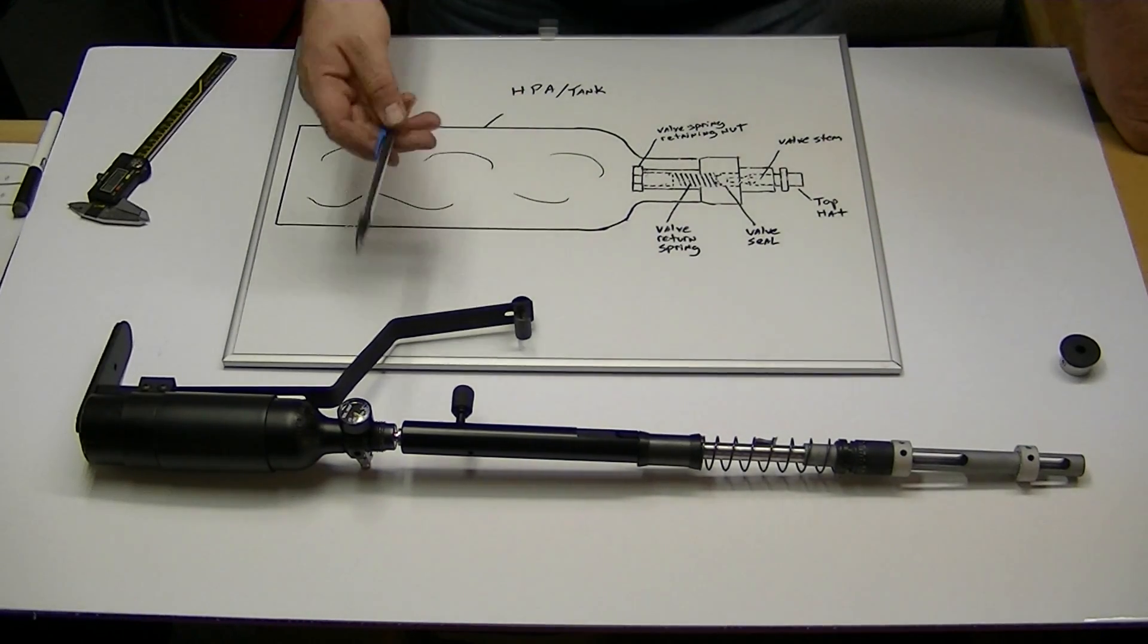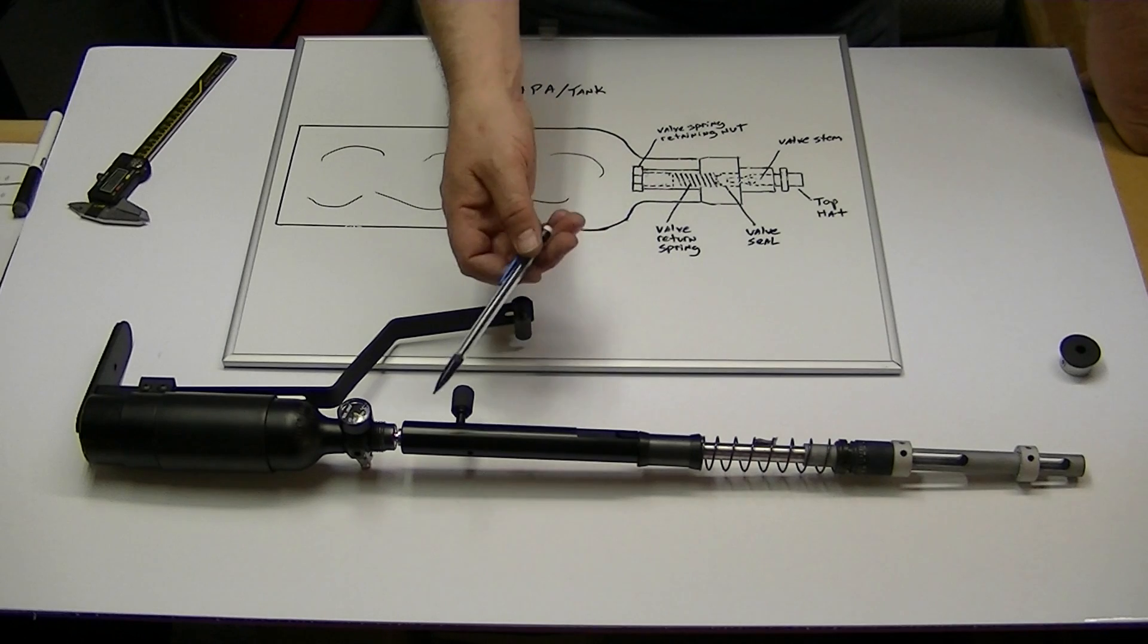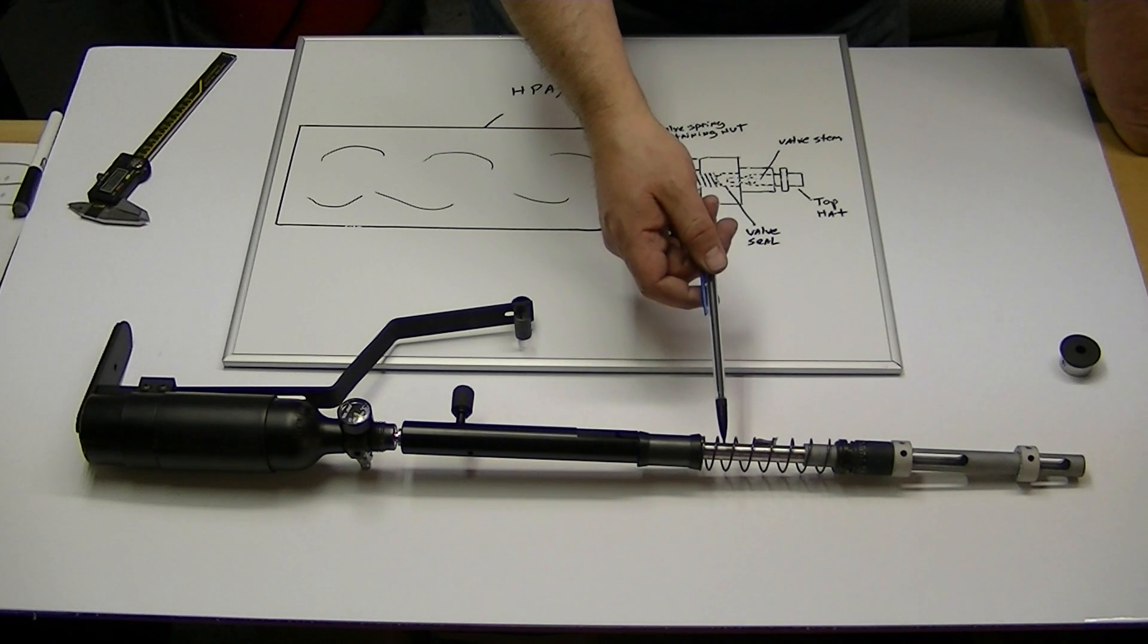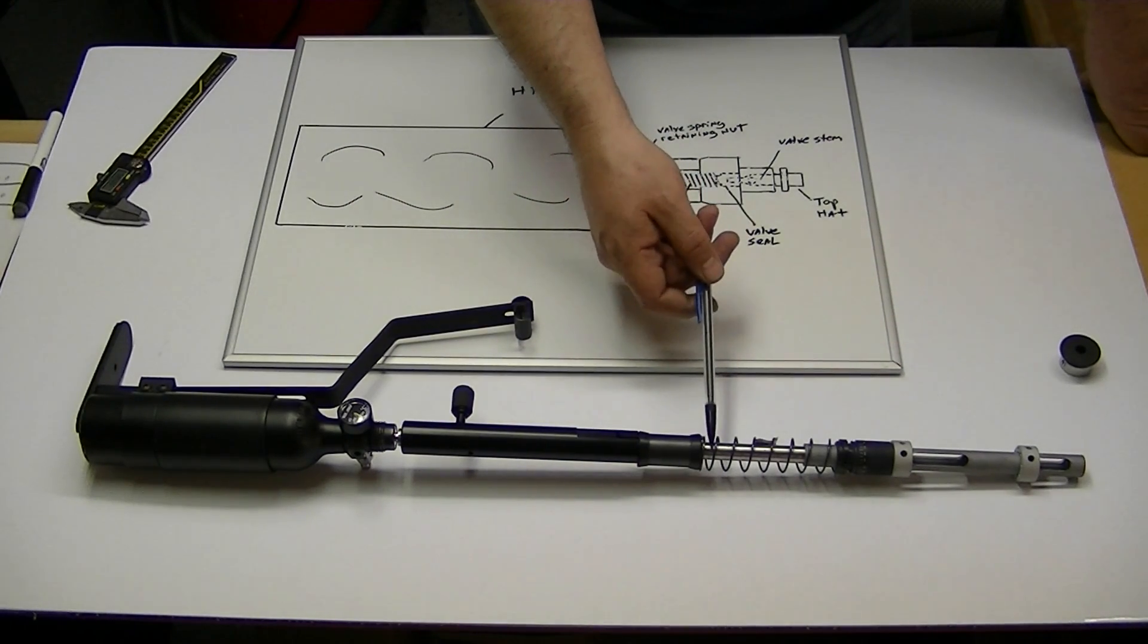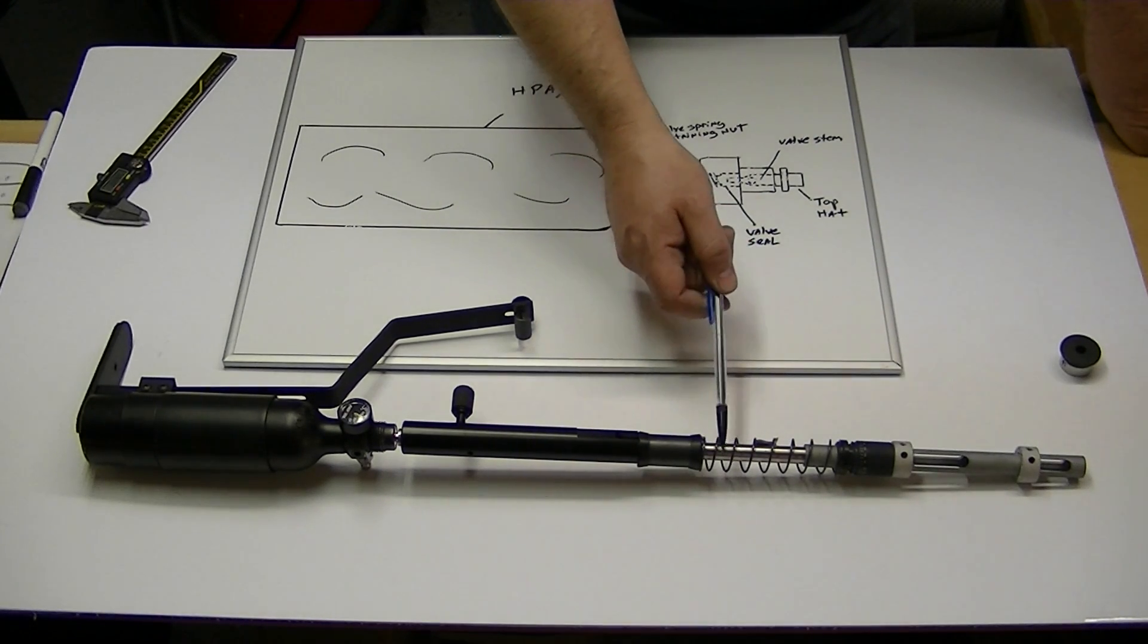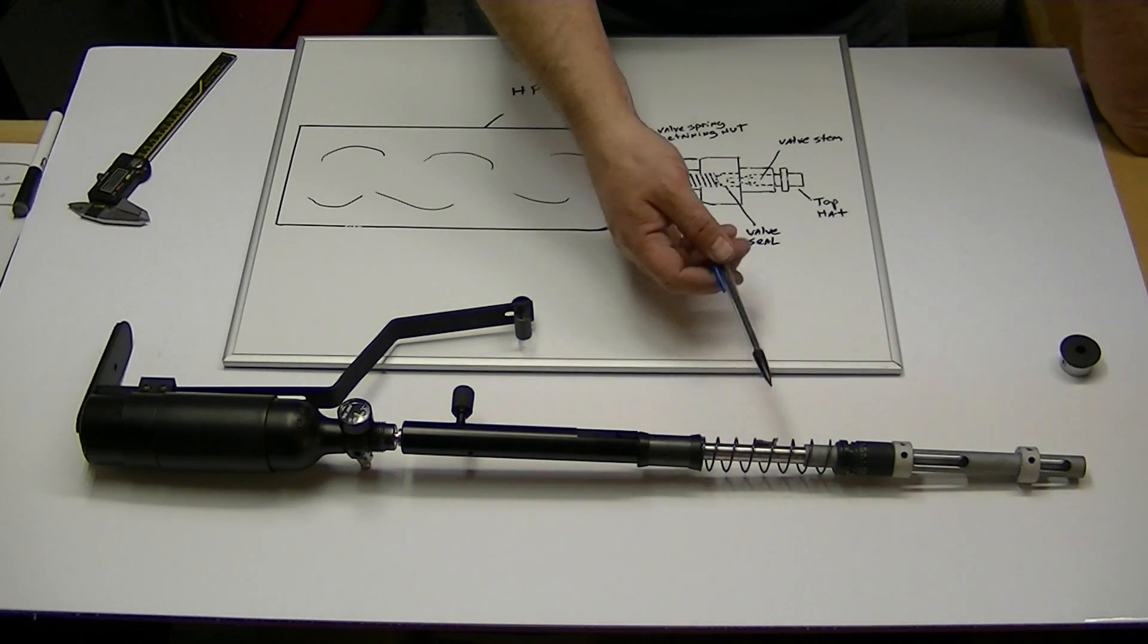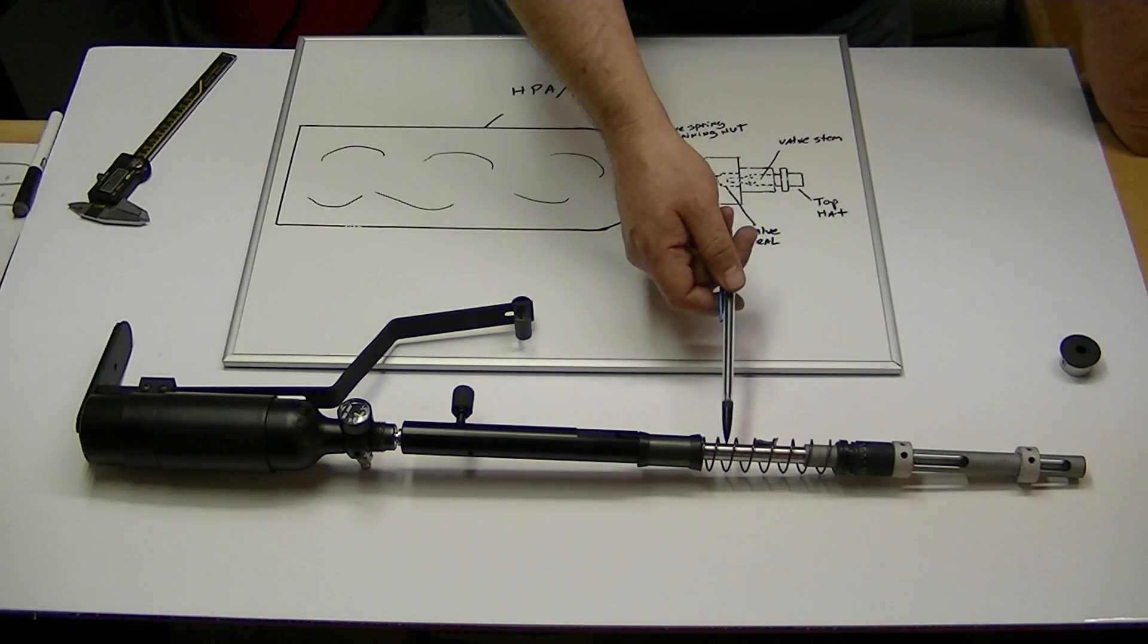So ideally you want just enough pressure here to open up this valve consistently and have a decent shot count, decent spread on your feet per second. Now hammer weight can help you open this valve too, especially at the higher pressure. The Talon P, the Condors, Condor SS are going to come, this one doesn't have one on it right now, but it does come with an extra hammer weight, which is going to assist you in opening up that valve at the higher pressures, but you need to keep in mind that whenever you have that hammer weight in here, that it's going to automatically give you a certain amount of preload on the spring.